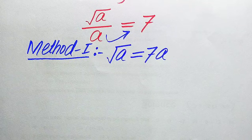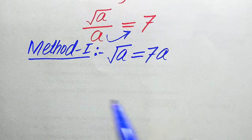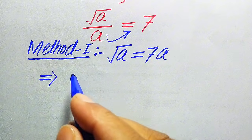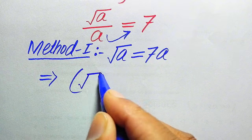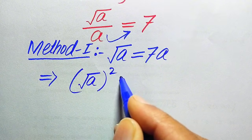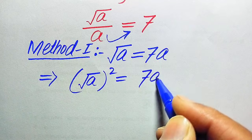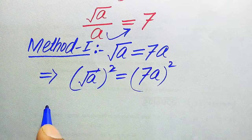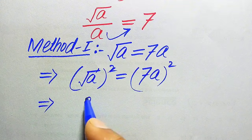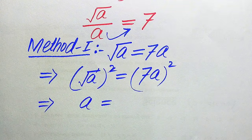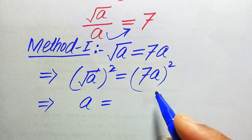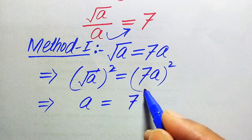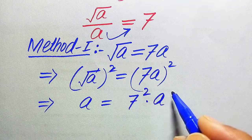In the next step we need to remove the square root sign from the left-hand side. For this we apply squaring on both sides. When we apply squaring on both sides, the square and square root are gone and we get a equals — on the right-hand side we apply the square separately on both values, giving us 7 squared multiplied by a squared.